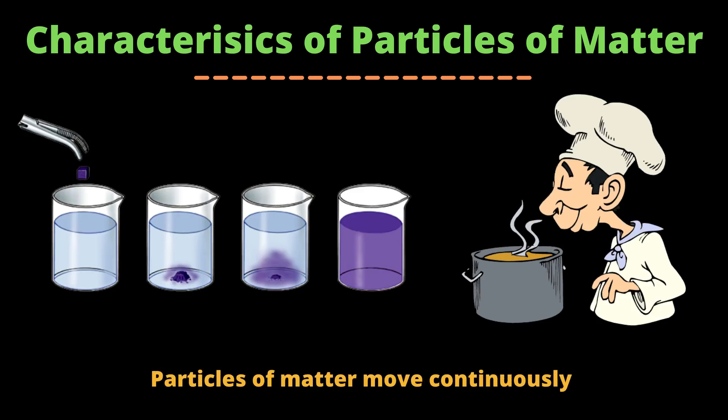The second characteristic of particles of matter is that particles of matter move continuously. Let's take some day-to-day events to understand this: ink spreads all over water by itself, and we can smell sizzling food from a distance. This happens because every particle of matter has kinetic energy — it is minimum in solids, more than solids in liquids, and maximum in gases.